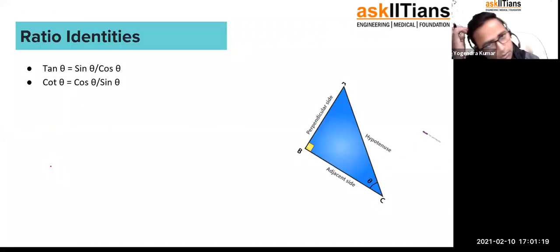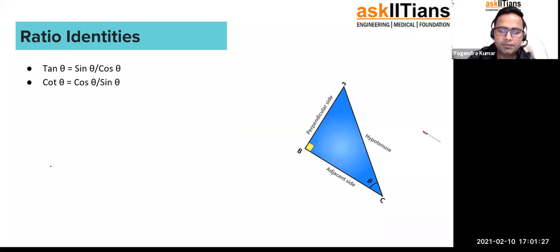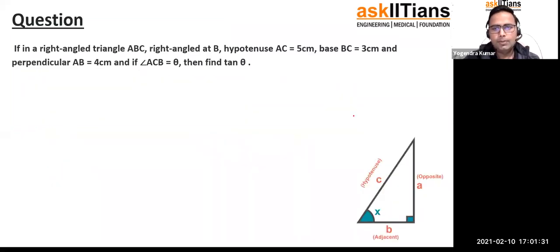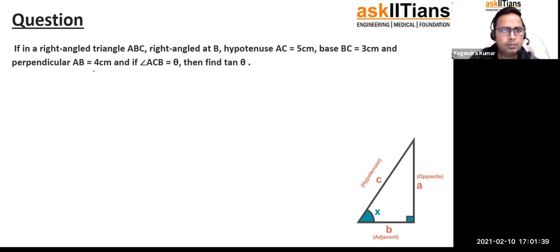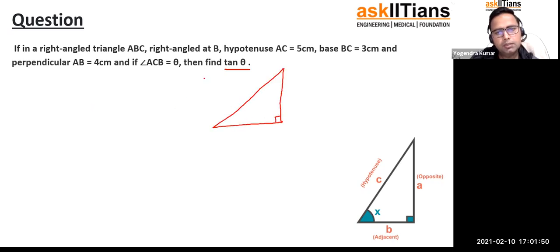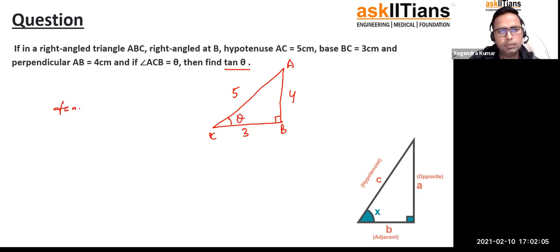For ratio identities: tan θ = sin θ/cos θ and cot θ = cos θ/sin θ. Now a question: in a right angle triangle ABC, right angle at B, hypotenuse is AC, base is BC = 3, and perpendicular is AB = 4. Find tan θ where θ is angle ACB. Tan θ = opposite/adjacent = AB/BC = 4/3.